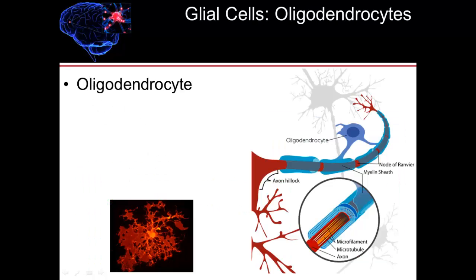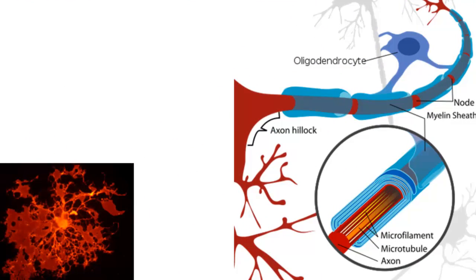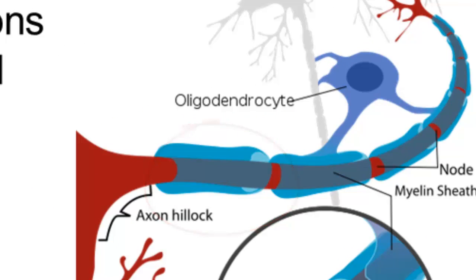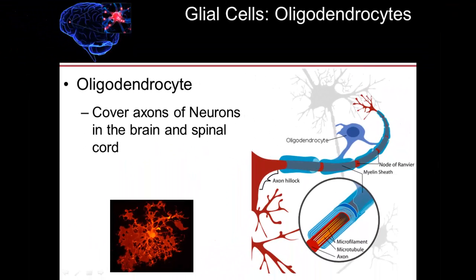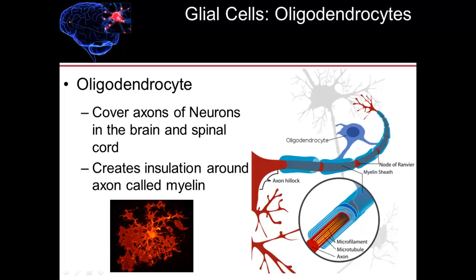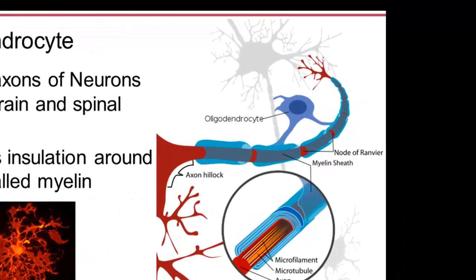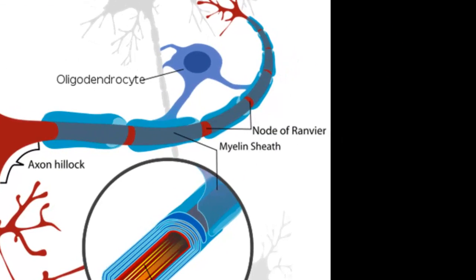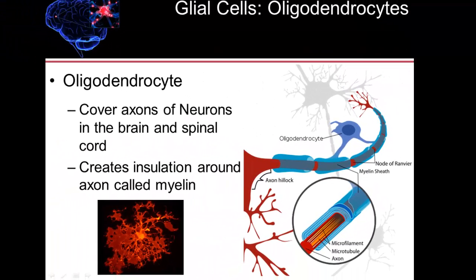Another type of glial cell is the oligodendrocyte. The oligodendrocyte is a cell that covers the axon of a neuron. The axon of a neuron is usually long and travels a long distance. As seen on the right-hand side, the oligodendrocyte sends out part of its cell structure and wraps it around the axon, covering axons in the brain and spinal cord. It creates an insulation around the axon referred to as myelin. That myelin protects the axon and allows it to transmit information quickly. Oligodendrocytes are extremely important in the functioning of the neuron.